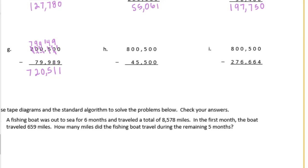H. 0 minus 0 is 0. 0 minus 0 is 0. 5 minus 5 is 0. 0 minus 5 we cannot do — I need to borrow from the 8. Bring it back to make that a 10. 10 minus 5 is 5. 9 minus 4 is 5. And 7 minus nothing is 7. We get 755,000.